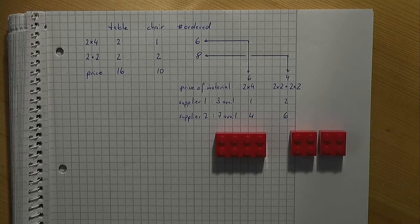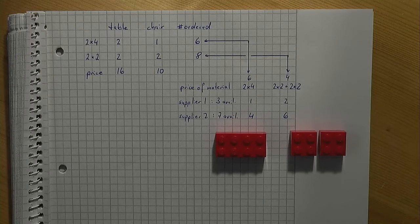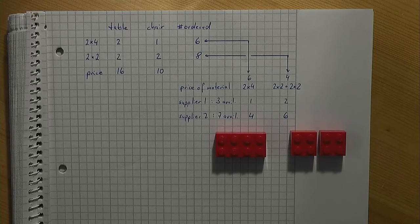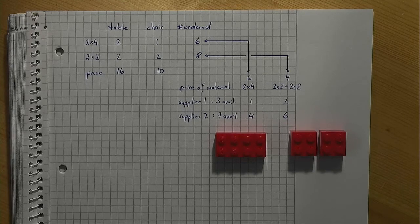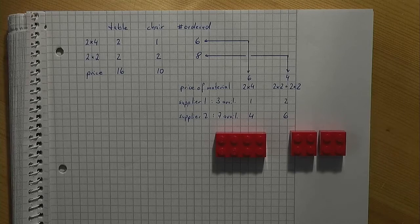So, if we need 6 2x4s, we must order 6. And if we need 8 2x2s, we must order 4 2x4s and request that these be cut into 2x2s.